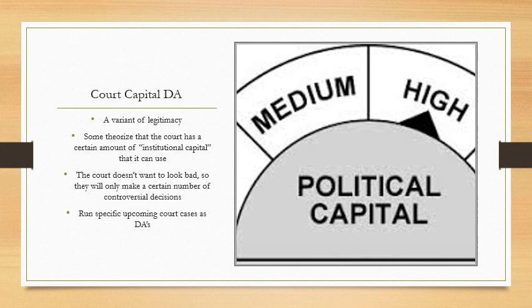The way you run this is by looking at the upcoming docket, researching a decision that's going to be really controversial, and arguing the Supreme Court needs its institutional capital to make that decision. If the plan saps that capital, the court will go the other way. This is probably the most popular modern courts dis-ad, and along with the constitutional amendment counter-plan, it's the bread and butter of teams against Supreme Court cases.